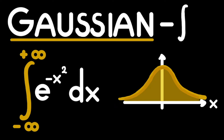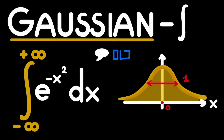In this video we'll be calculating the integral of a Gauss curve, in particular a Gauss curve with a standard deviation of 1 and an average of 0. This boils down to finding the area under this bell curve. If you have any questions along the way, feel free to ask them in the comments down below, and with that said let's get right into it.